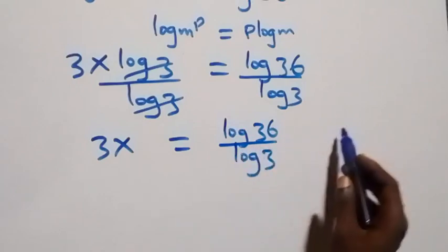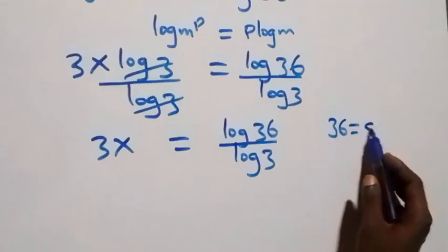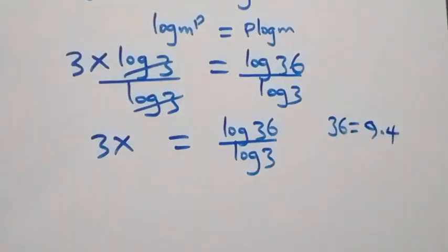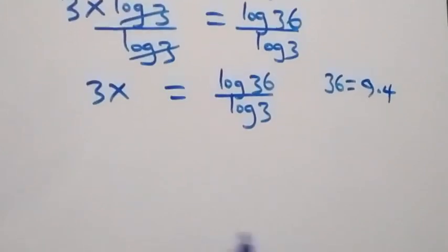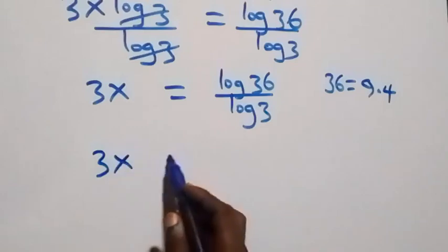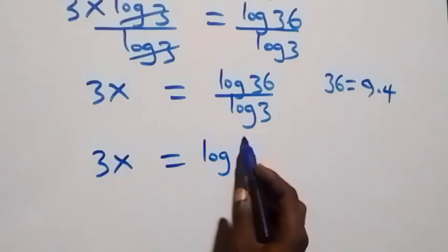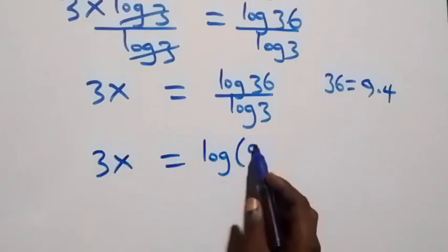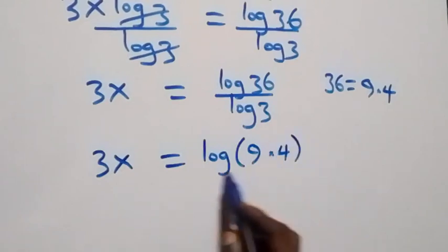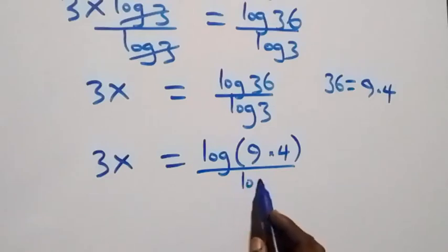From here we can express 36 as 9 times 4, which implies we have 3x equals log of 9 times 4, all over log 3.